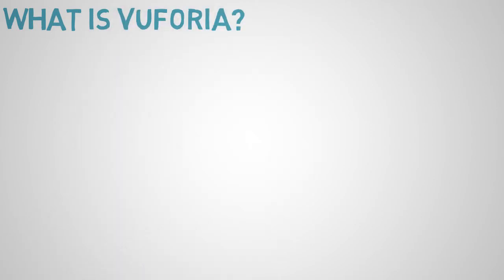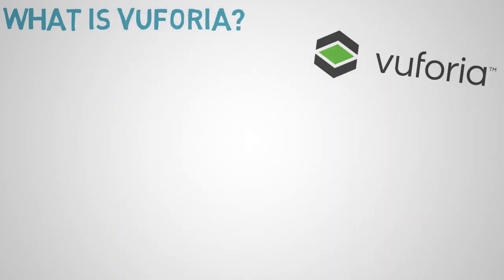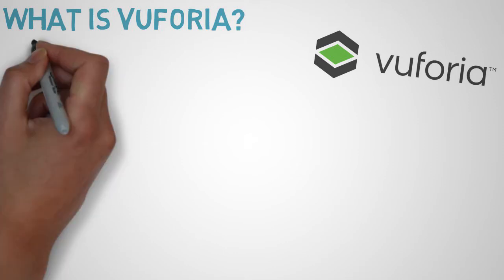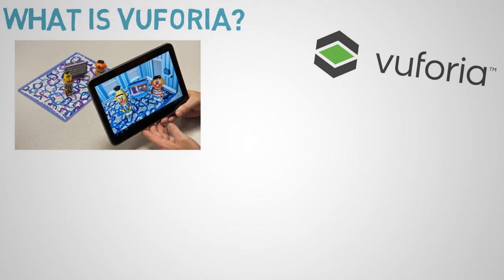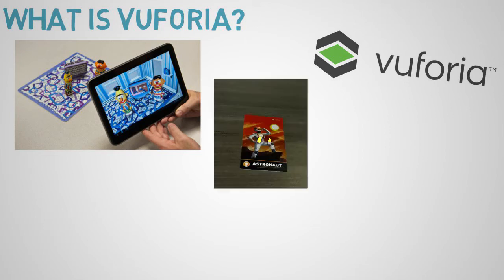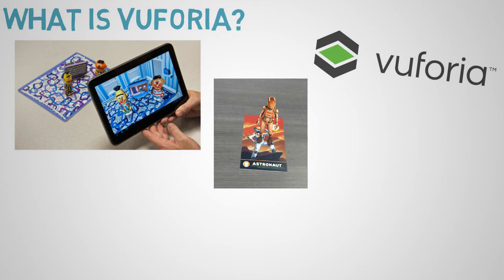Now let's take a look at what Vuforia is. Vuforia is an augmented reality software development kit (SDK) for mobile devices that enables the creation of augmented reality applications. It uses advanced computer vision technology to recognize and track planar images — such as image targets, sample 3D objects, and ground planes — in real time. This image recognition capability enables developers to position and orient virtual objects such as 3D models in relation to real world images when in view of a mobile device's camera. The virtual object tracks the position and orientation of the image in real time, so that the viewer's perspective on the objects corresponds with their perspective on the image target, making it appear that the virtual object is part of the real world scene — hence the term augmented reality.